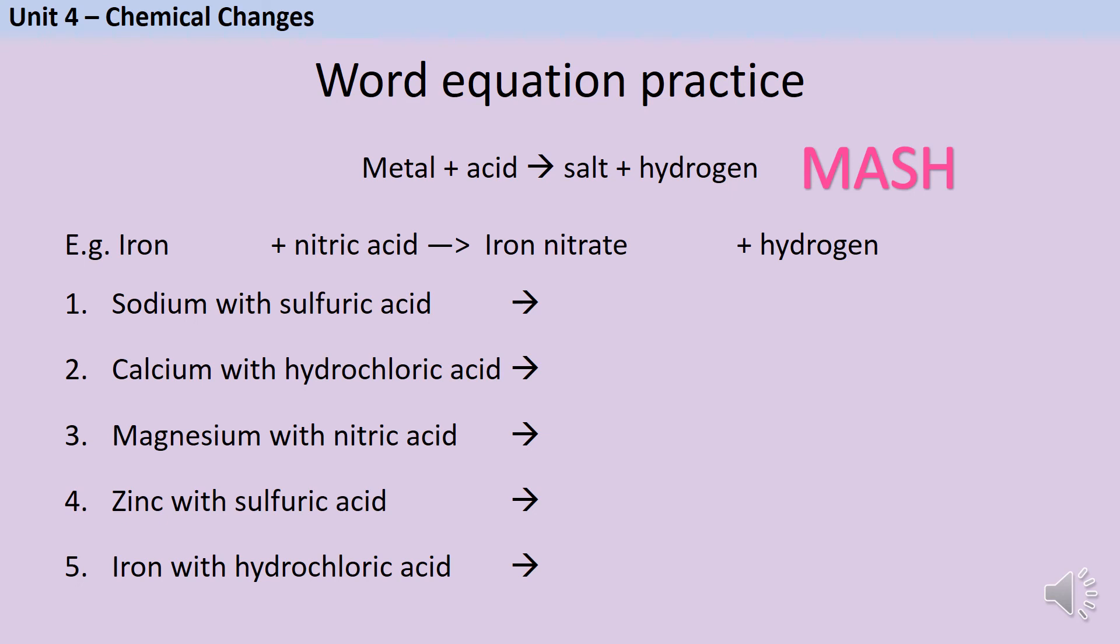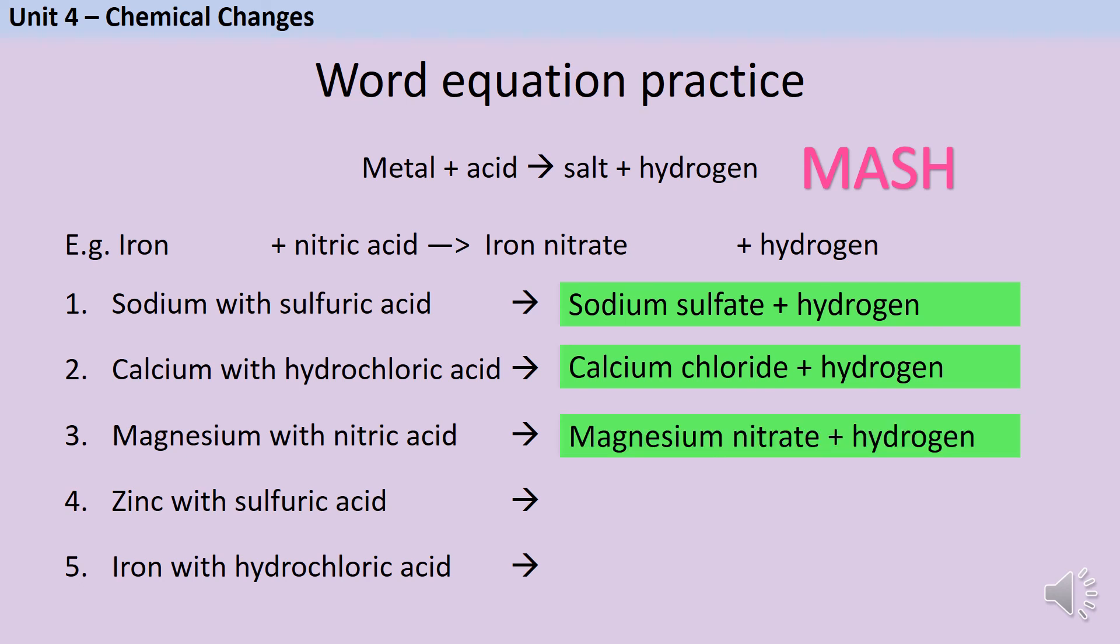Hopefully you've correctly identified that sodium reacts with sulfuric acid to make sodium sulfate plus hydrogen. Calcium reacts with hydrochloric acid to make calcium chloride plus hydrogen. Magnesium reacts with nitric acid to make magnesium nitrate plus hydrogen. Zinc reacts with sulfuric acid to make zinc sulfate plus hydrogen. And iron reacts with hydrochloric acid to make iron chloride plus hydrogen.